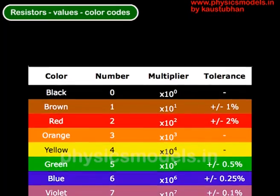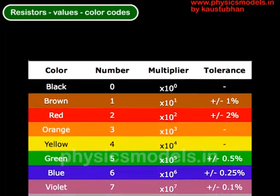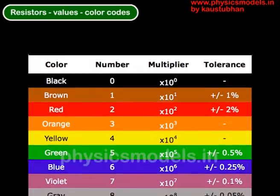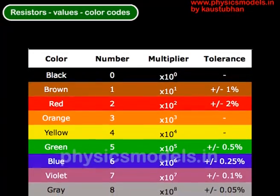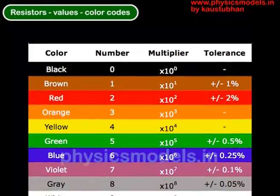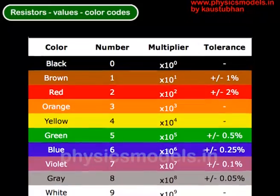So the first band red means 2, the second band if it's red it means 2 again and if the third band is also red it's multiplied by 100. So it will be 2, 2 into 100 so that will become 2200 ohms.